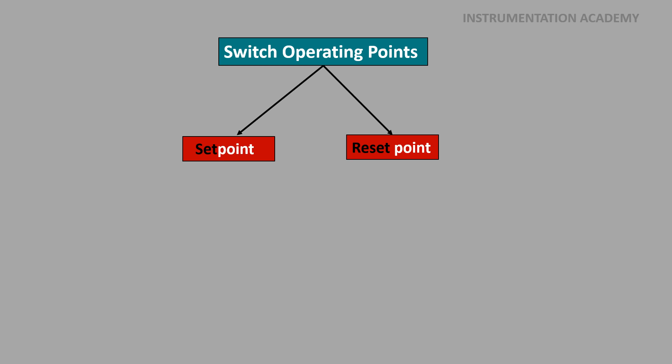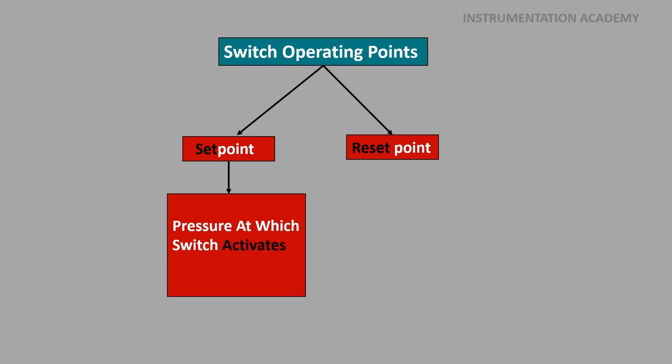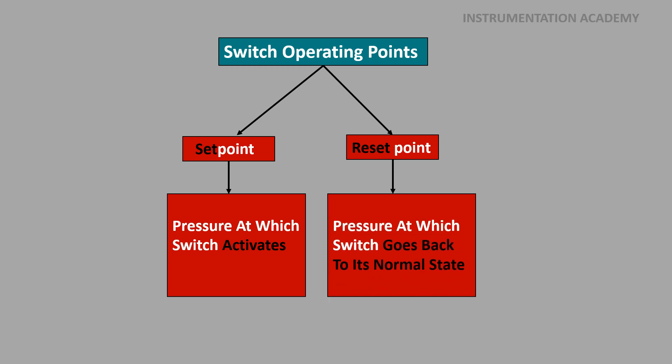All pressure switches have two operating points known as set point and reset point. Set point is the pressure at which the switch activates, and the reset point is the pressure at which the switch goes back to its normal position.